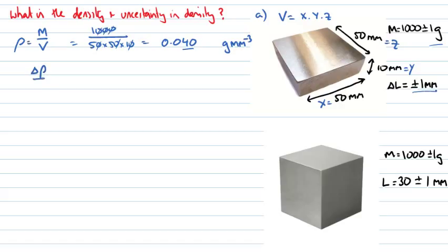So delta rho over rho, the relative uncertainty in the density, must be equal to delta m over m, the relative uncertainty in the mass, plus delta v over v, the relative uncertainty in the volume. And one of these terms we have, we've got delta m and m, but we don't have delta v and v.